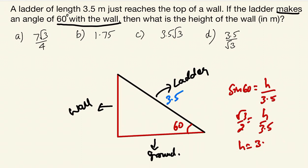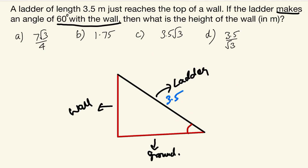But wait — the ladder makes an angle of 60 degrees with the wall, not with the ground. With the ground is usually the default assumption, but here it says with the wall. So the angle is on this side — the wall side. This is the key distinction students miss.